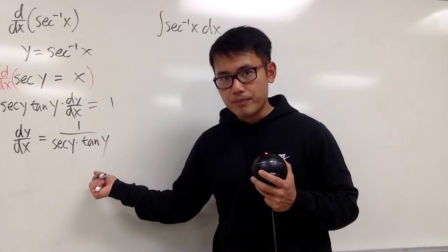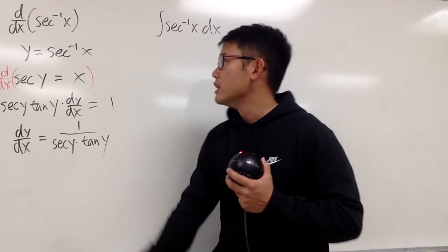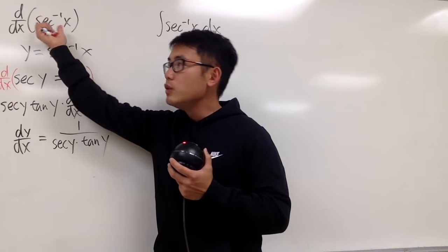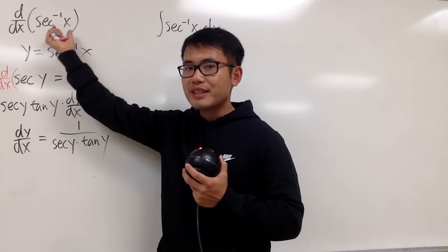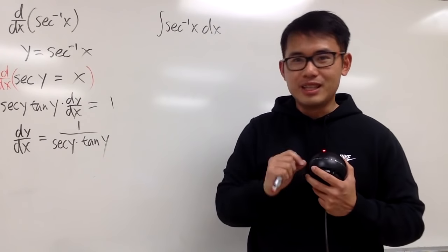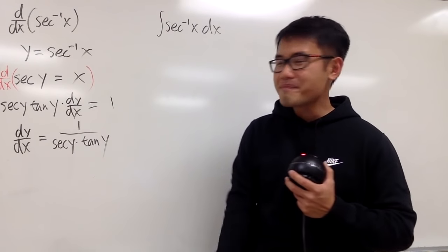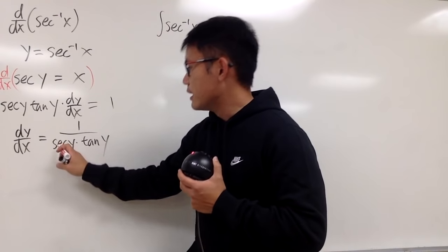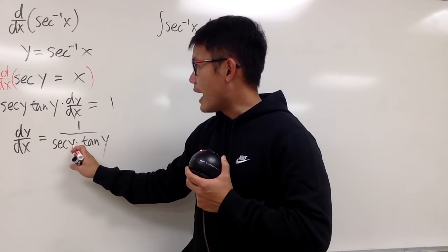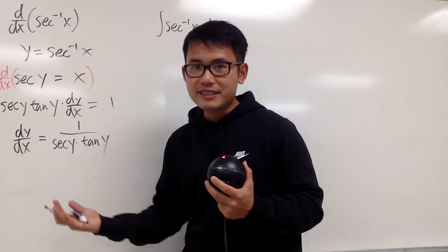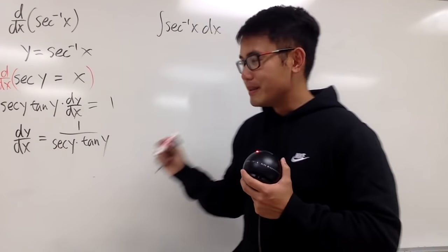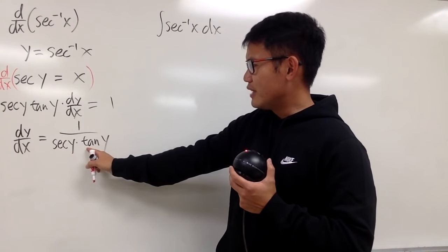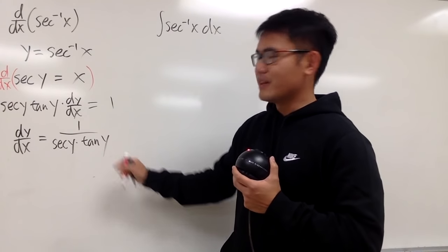We can divide both sides, so we get dy/dx equal to 1 over secant y times tangent y. This is not bad at all, but the original expression was in terms of x, so our answer should also be in terms of x. Secant y is exactly x, so that's nice.